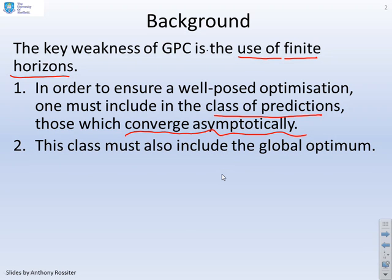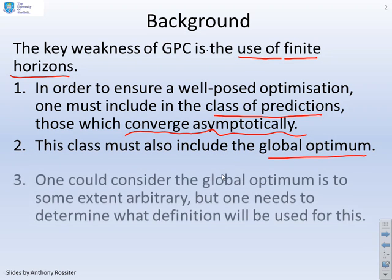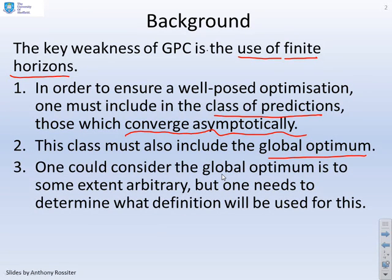Now this class of predictions must also include the global optimum. We have accepted that the definition of the global optimum is to some extent arbitrary, but we will give a definition because we need this.